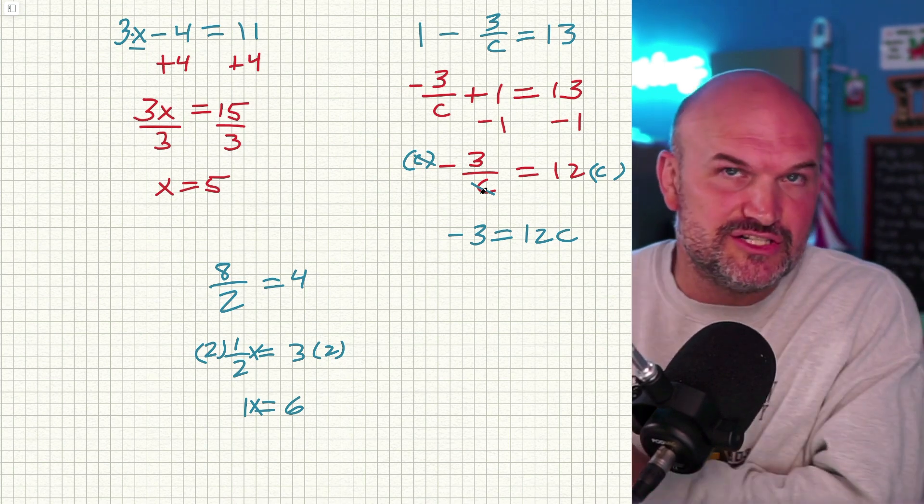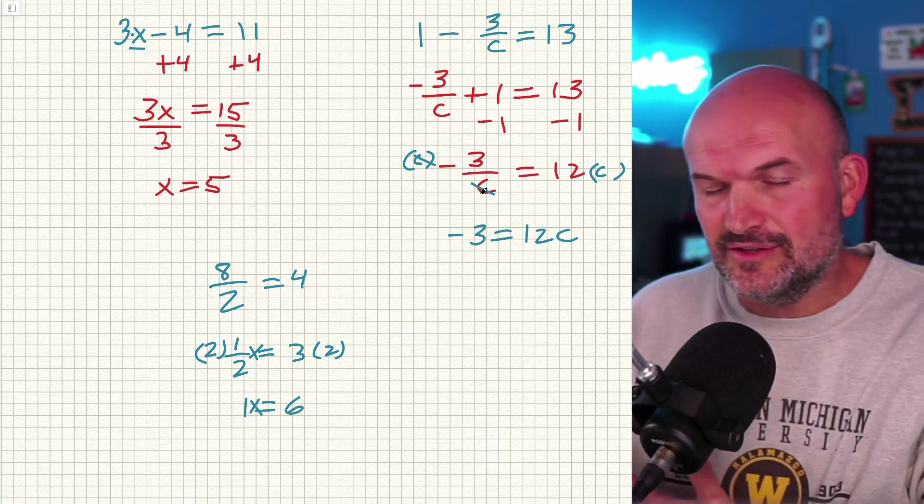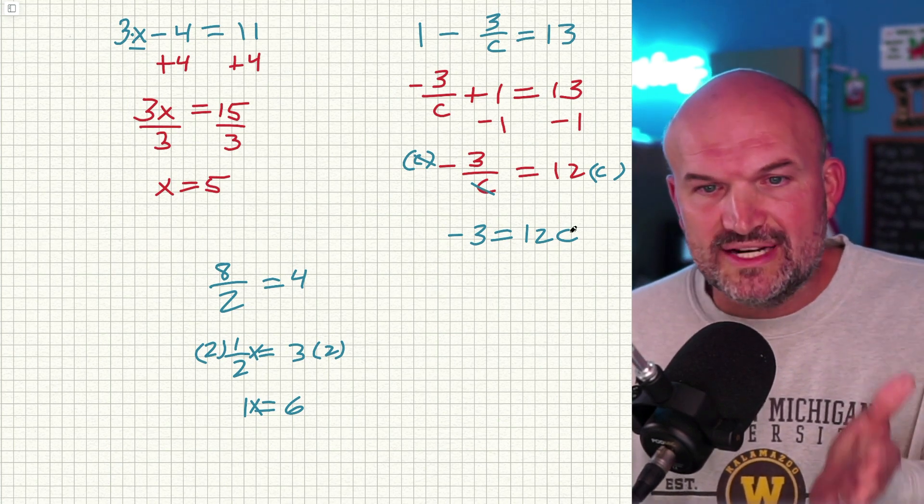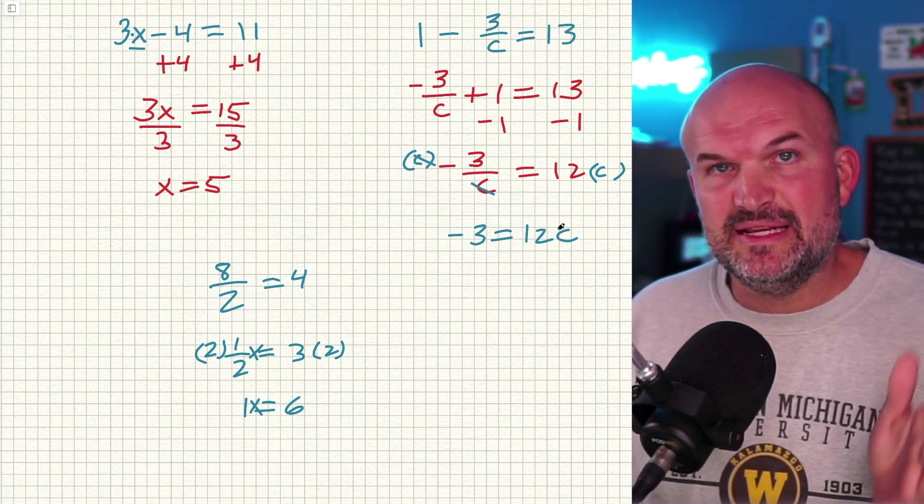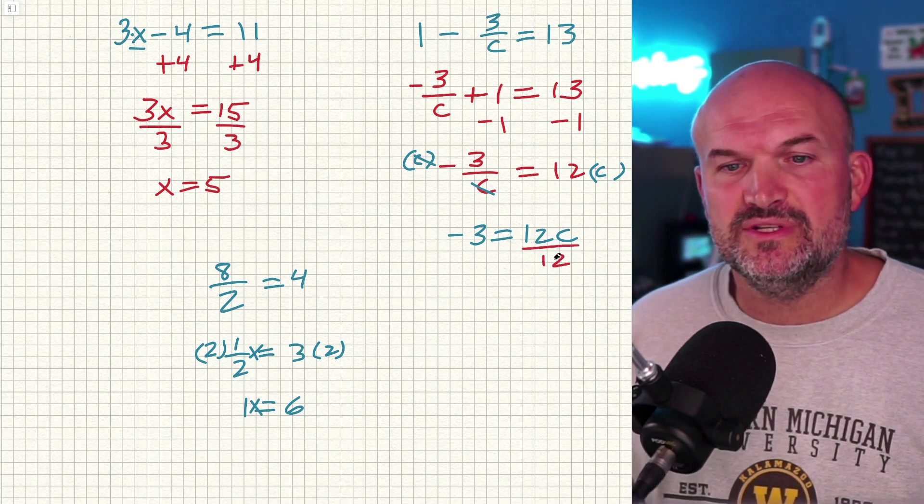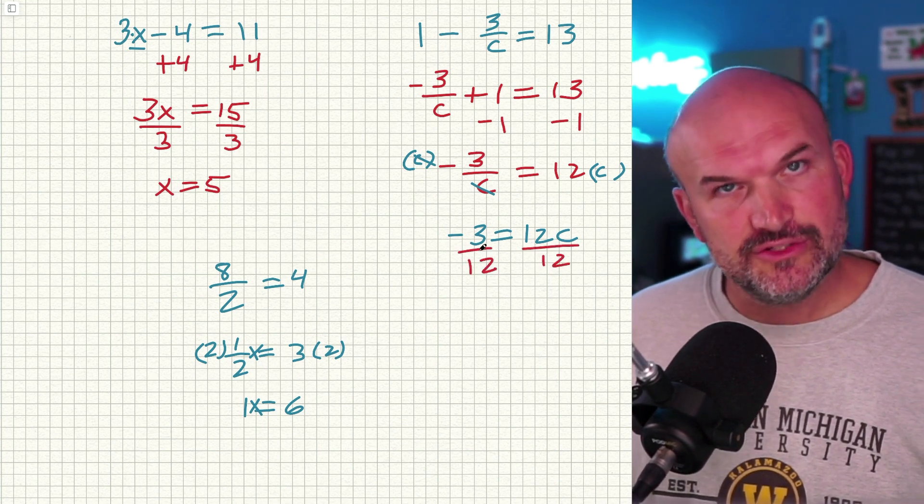All right. Now we have our operations on the right-hand side, which can confuse students a little bit, but let's just ask ourselves the question, what is happening to the C? The C is being multiplied by 12. How do we undo multiplication? We are going to divide by 12. And we're going to do that on both sides.